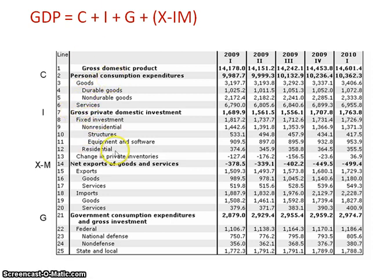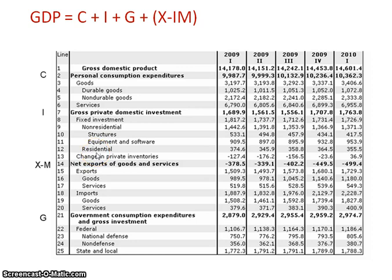The investment category is the hardest component. These are the different investments that businesses have — things like capital goods and machinery, which are used to produce multiple products. Remember that residential housing also falls into the investment category, so that one is really important to place correctly.